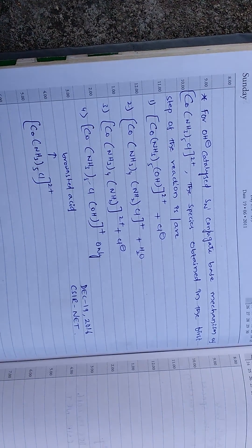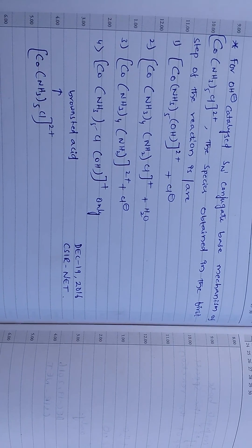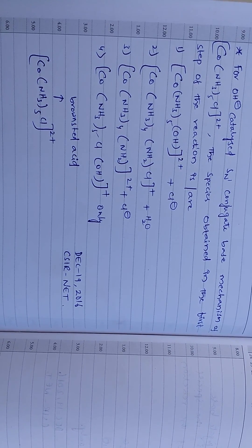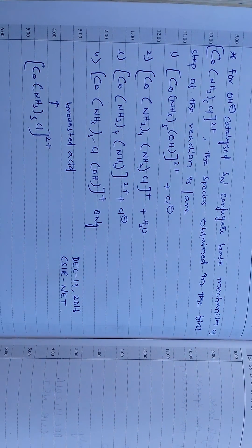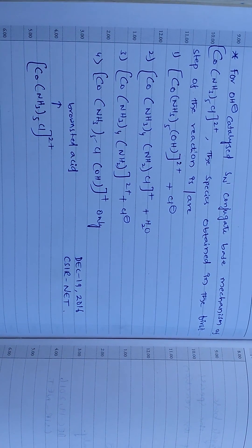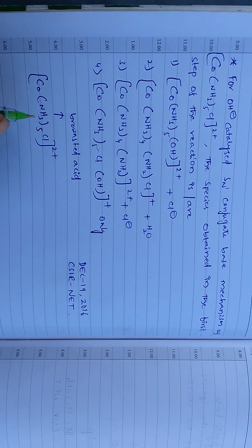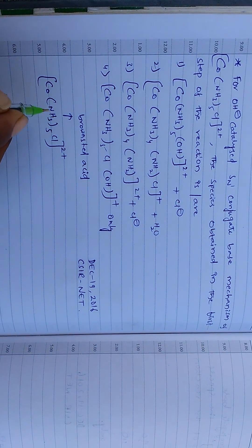So what is Brønsted acid? Brønsted acid means the substance or substrate which donates proton to the base. So substrate should contain donatable hydrogens, that means protons.